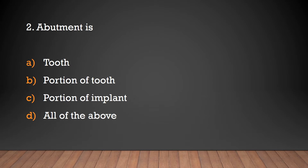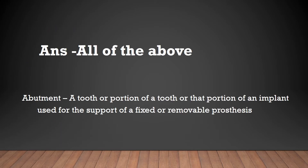Abutment is defined as: a tooth, portion of a tooth, or portion of an implant — all of the above. All of the above. Abutment is defined as a tooth or portion of a tooth or portion of an implant used for the support of a fixed or removable prosthesis.